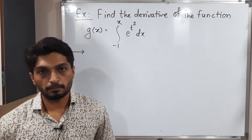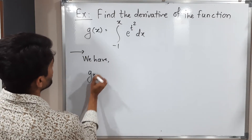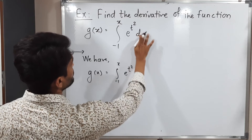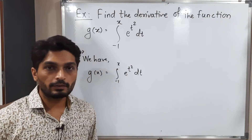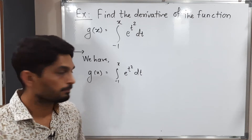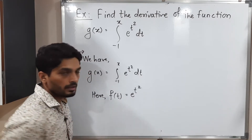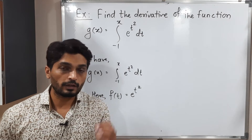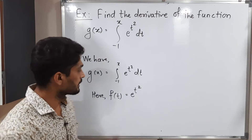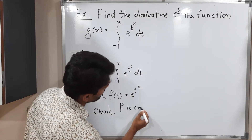Let us discuss the second example. We have G of x equal to integration from minus 1 to x of e raised to t square dt, and we have to find its derivative. The function inside the integration is e raised to t square, so that is our f of t. Here f of t is e raised to t square. The basic condition of the first fundamental theorem of calculus is that the function should be continuous, and the exponential function is always continuous.